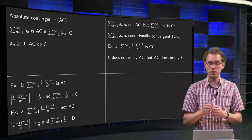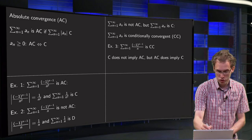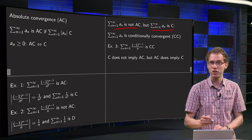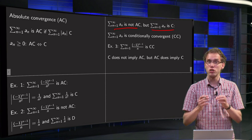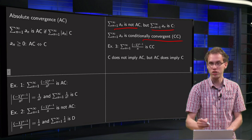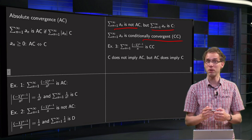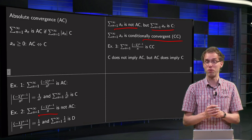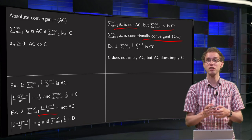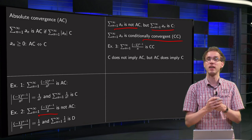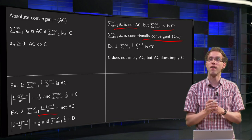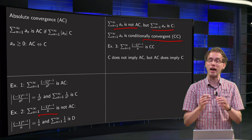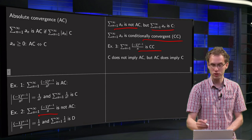A second notion: if a series is not absolutely convergent, but the series itself is convergent, such a series is called conditionally convergent. Can this happen? Yes, we have already seen an example. The series (-1)^(n-1)/n is convergent — it is an alternating series whose terms decay to zero — however, we have also seen that it is not absolutely convergent. A series like that is called conditionally convergent.